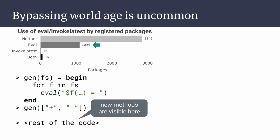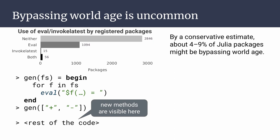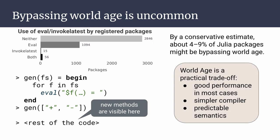By a conservative estimate based on our static analysis, about 4 to 9 percent of Julia packages might be bypassing world age. This suggests that world age provides a practical trade-off between flexibility, performance, and compiler complexity.